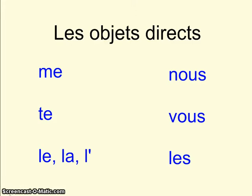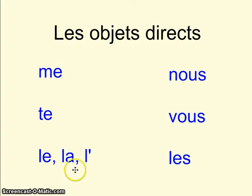You may have already learned about direct object pronouns in French. They are pronouns, meaning they replace something. Let's look at these direct object pronouns: me, te, le, la, nous, vous, et les.